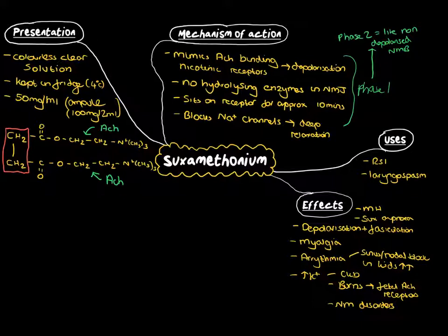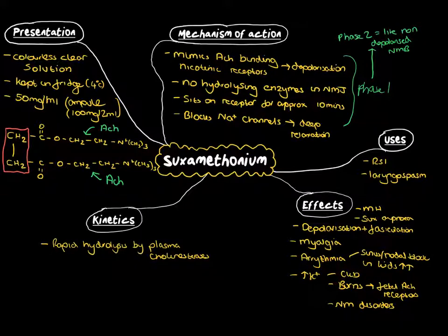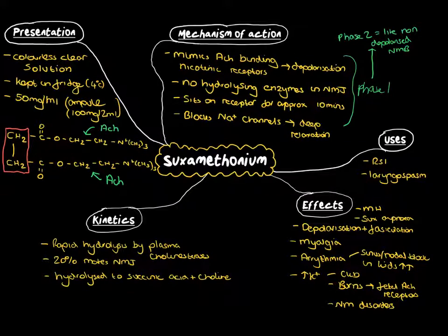From the kinetics point of view of succs, succs is essentially rapidly hydrolyzed by plasma or pseudocholinesterases. Only about 20% of the actual succs you inject gets to the neuromuscular junction. It's rapidly hydrolyzed down into choline and then into succinic acid and choline on their own, and then only about 10% of it gets excreted into the urine because it's so rapidly metabolized.